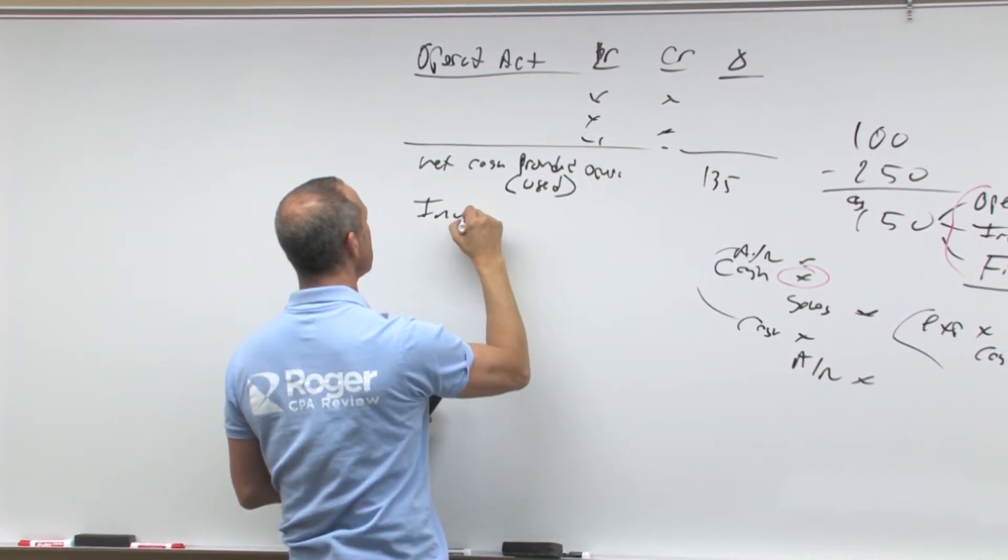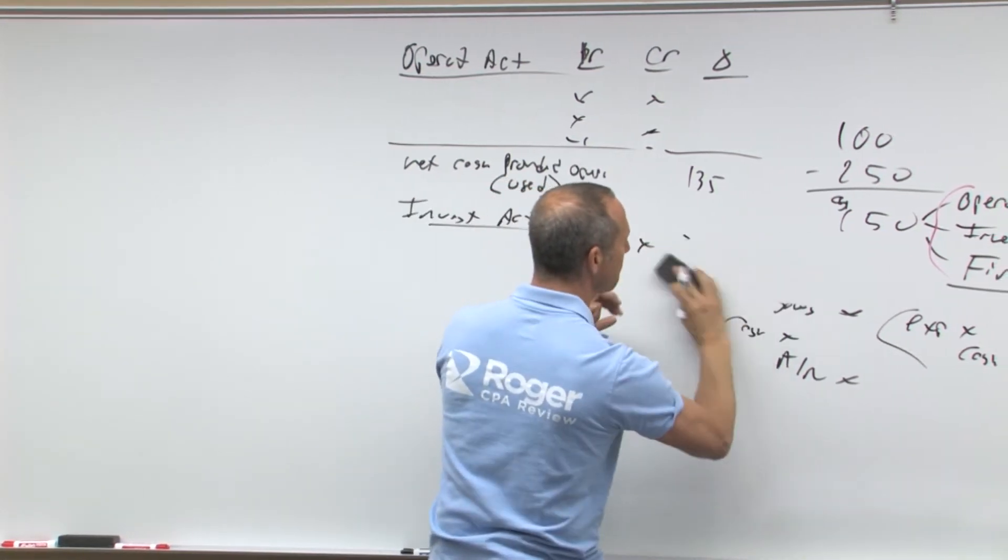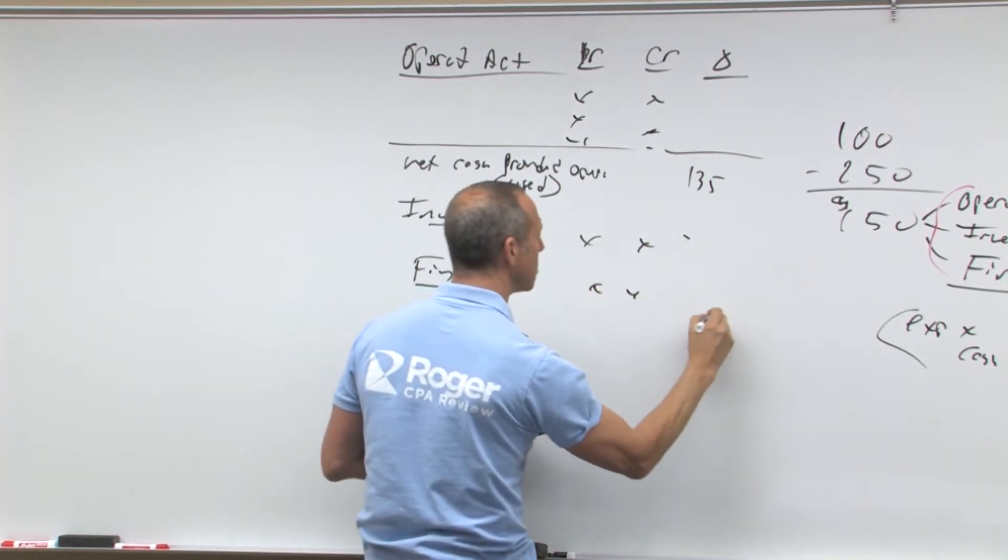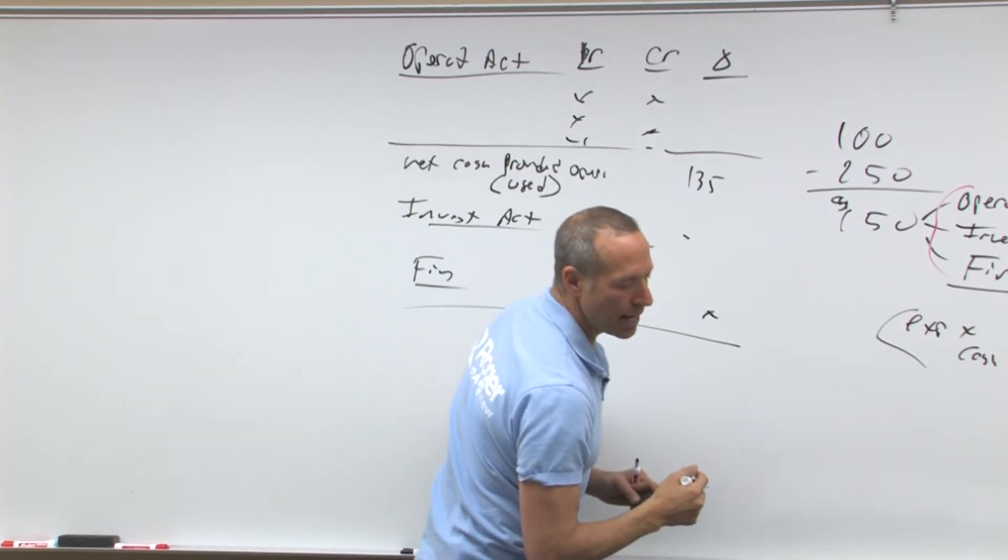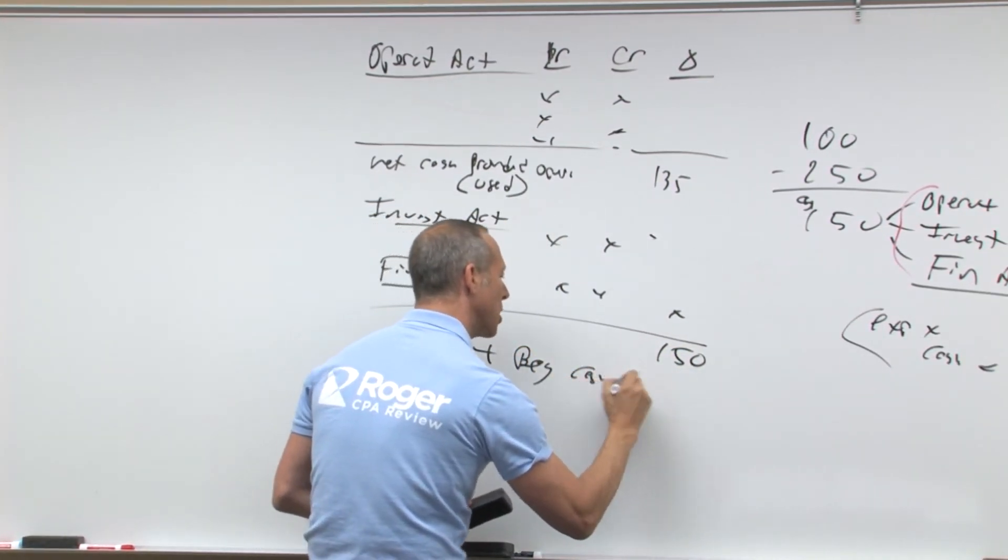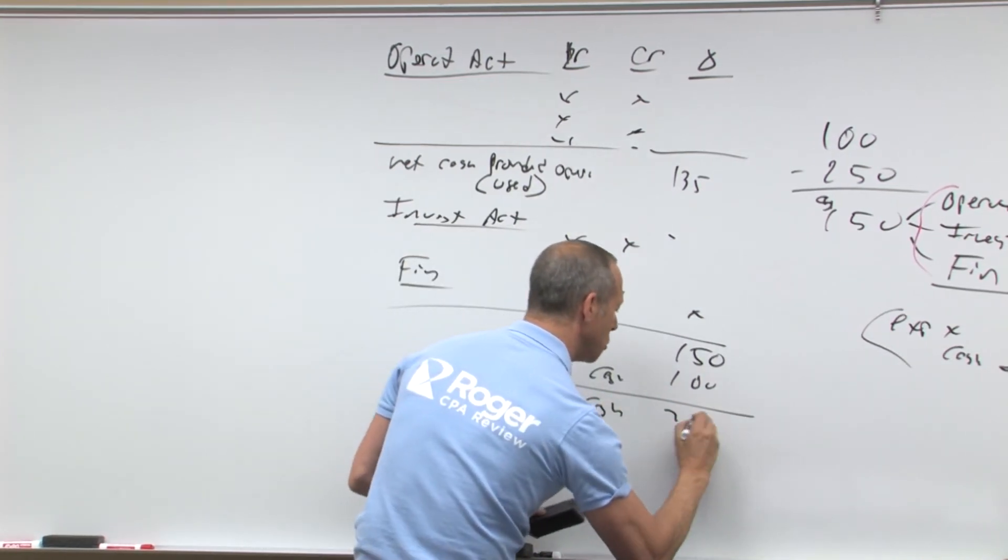Same thing, we've got investing activities, debit, credit, change. Then you've got your financing activities, debit, credit, change. So we end up with our net change of 150 plus beginning cash is 100, equals ending cash 250.